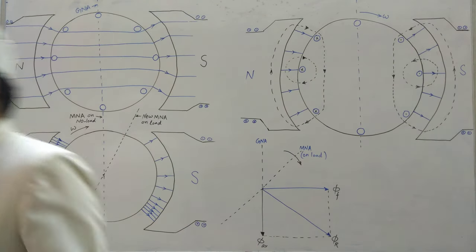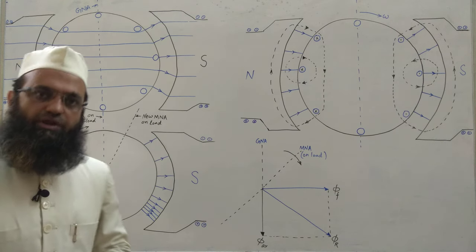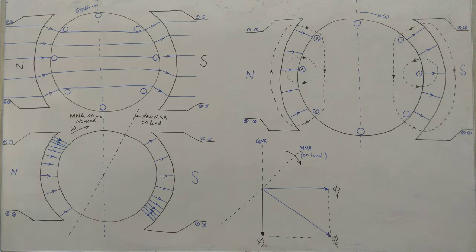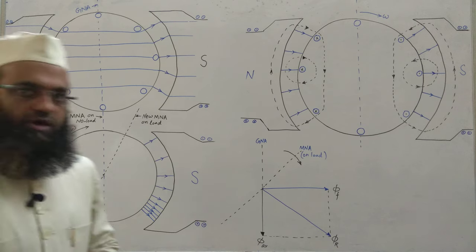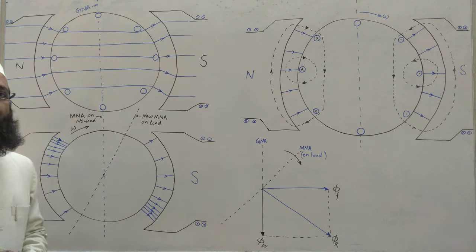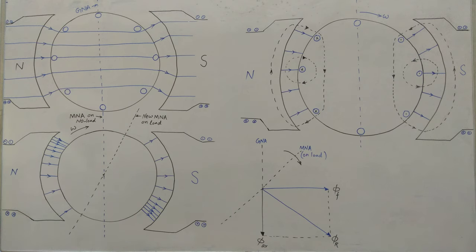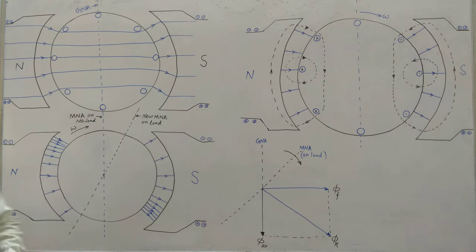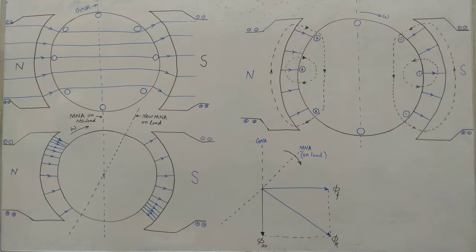Let us discuss armature reaction, which also creates problems in commutation as discussed in previous cases. First we will understand what armature reaction is, and then discuss how it affects commutation. This figure shows the field setup — north pole, south pole — a two-pole DC machine. We are not rotating the rotor yet, so no EMF is induced in the armature conductors; only the field windings are excited and the field fluxes are shown.